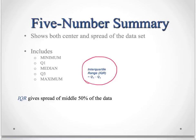And it also shows us what the interquartile range is. That's Q3 minus Q1. So the range was the maximum minus the minimum.